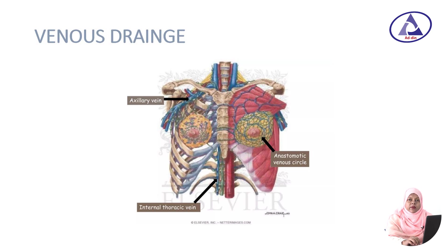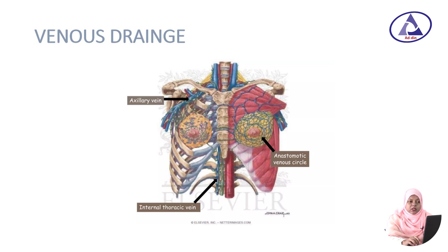Venous drainage follows the same names as the arteries: the axillary vein, internal thoracic vein, and anastomotic venous circle. In the case of veins, it is important that if any carcinoma occurs in the breast, it can spread to the vertebrae through the venous system. This is a very important point to remember.